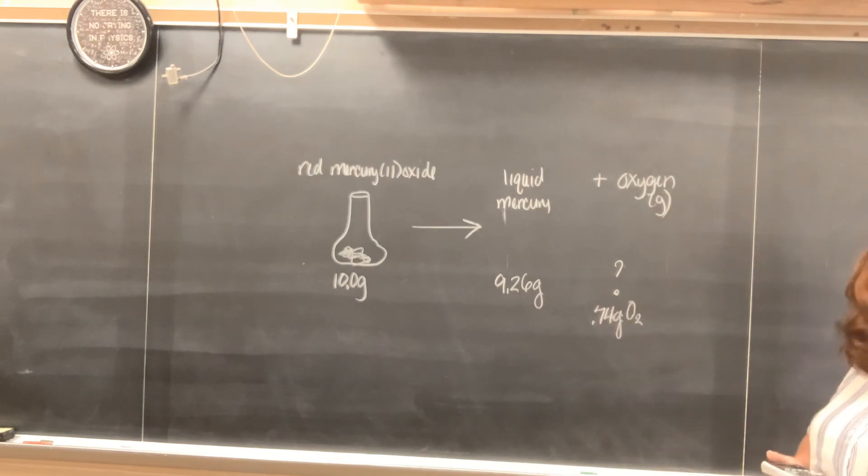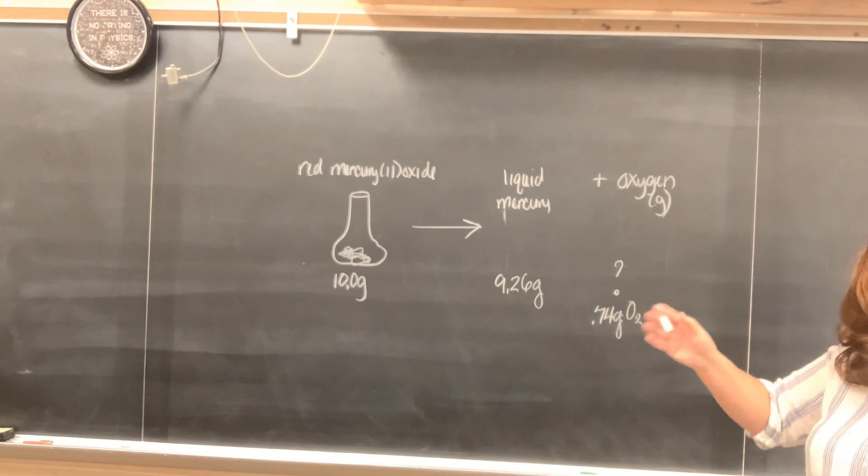0.74 plus 9.26 is the total 10 grams. The before has to equal the after. Not all the problems are exactly the same, but the concept is the same. Whatever you start out with has to be whatever you end up with.